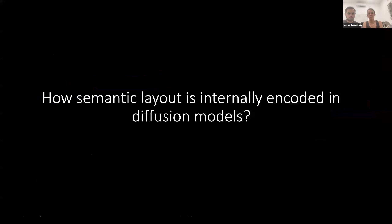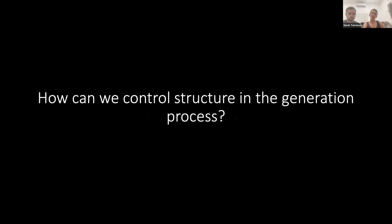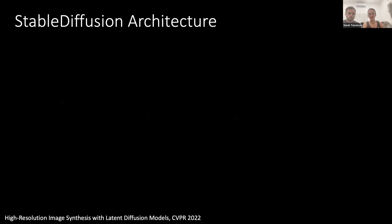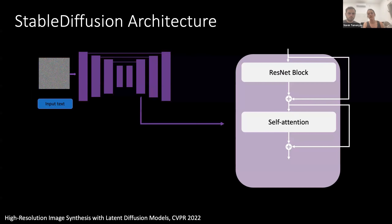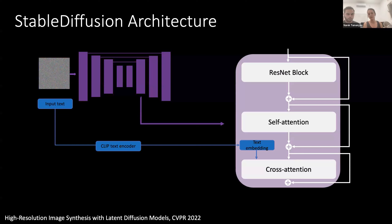The first question we posed was: how is semantic layout internally encoded in the diffusion model? Which feature maps or layers are more dominated by structure information? Once we gain some understanding, we want to ask how we can control the structure in a new generation process. The model we wanted to inspect is Stable Diffusion, the open-source text-to-image model. Its input is Gaussian noise and an input text, and the architecture is a U-Net with downsampling and upsampling blocks with skip connections. Each layer has a residual block, a self-attention block, and a cross-attention block where the text interacts with the generated image.